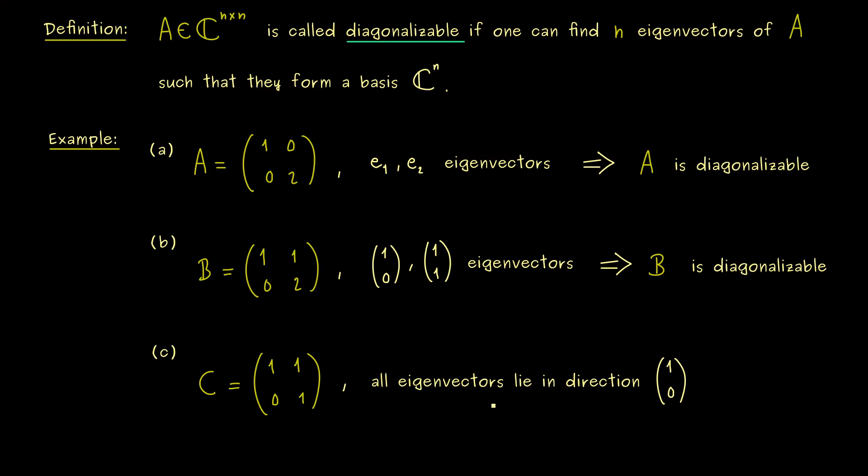Therefore, we only have 1 eigenspace and sadly here, it's only a 1 dimensional one. Hence, we can immediately conclude that C is not diagonalizable. So in this case, we don't have enough directions for the eigenvectors, the eigenvectors cannot span the whole C^2.